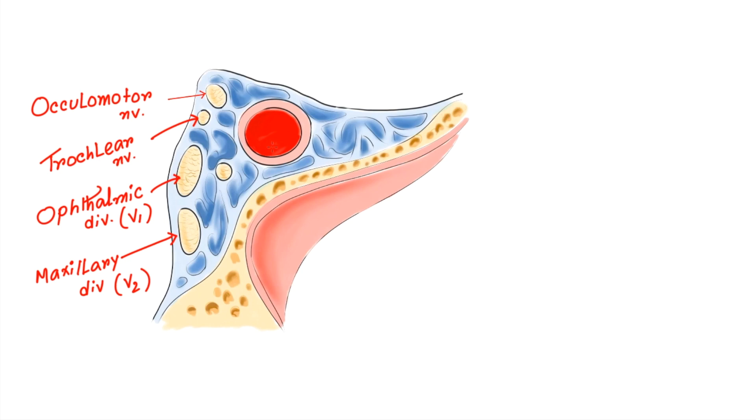Now some structures are present inside the cavernous sinus. Here you can see the carotid artery and abducent nerve which are present within the sinus. Now let's see the mnemonics.